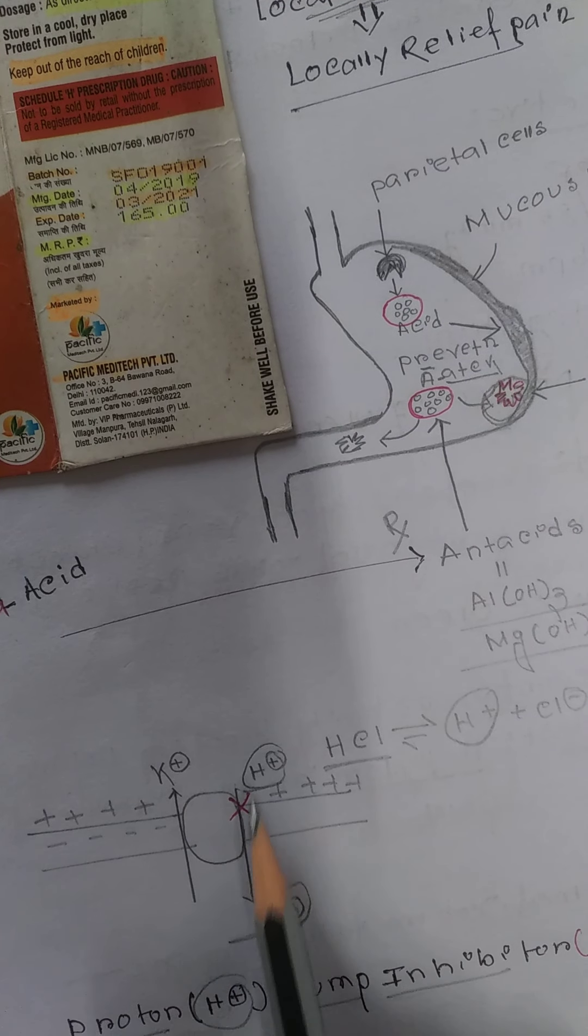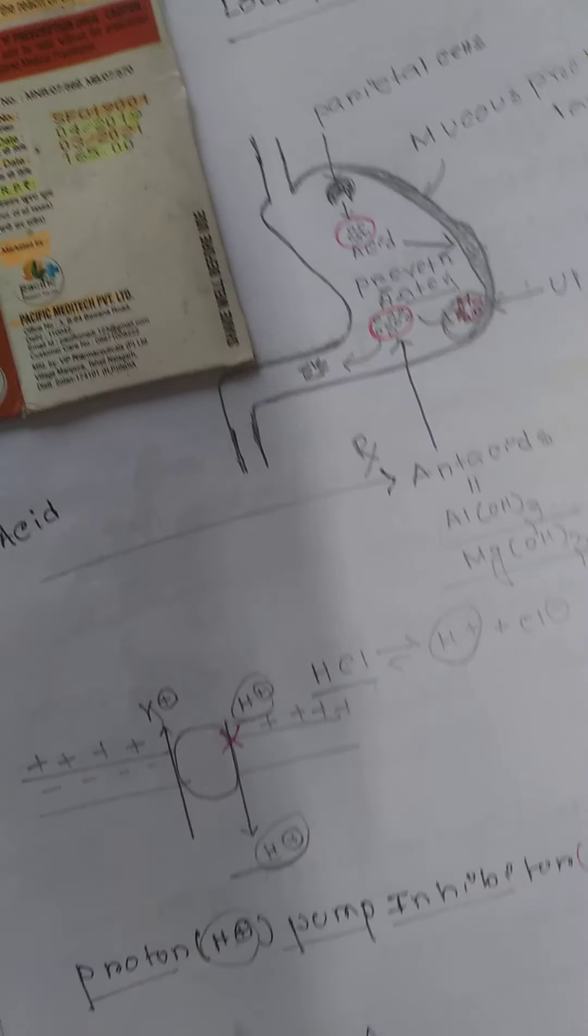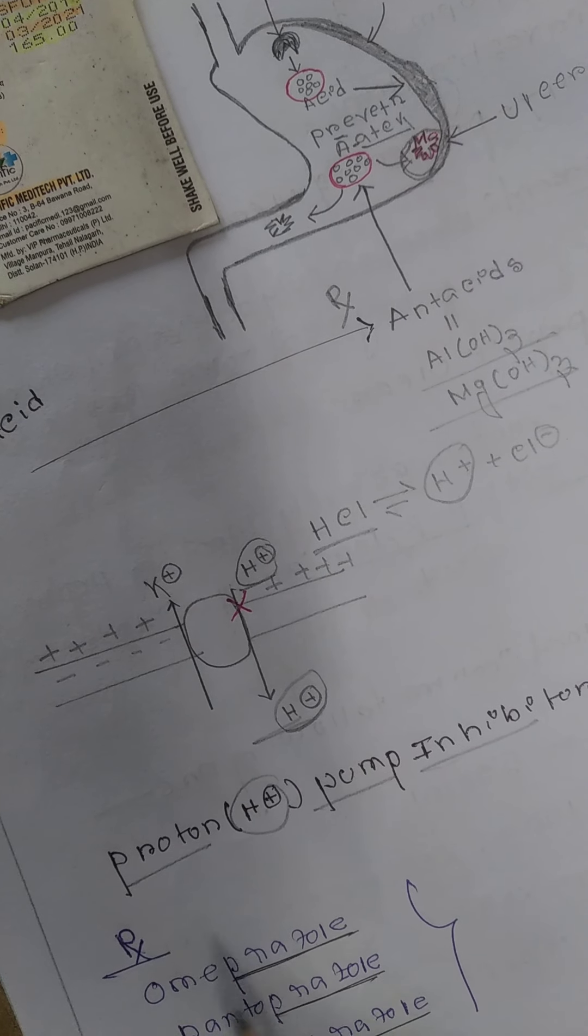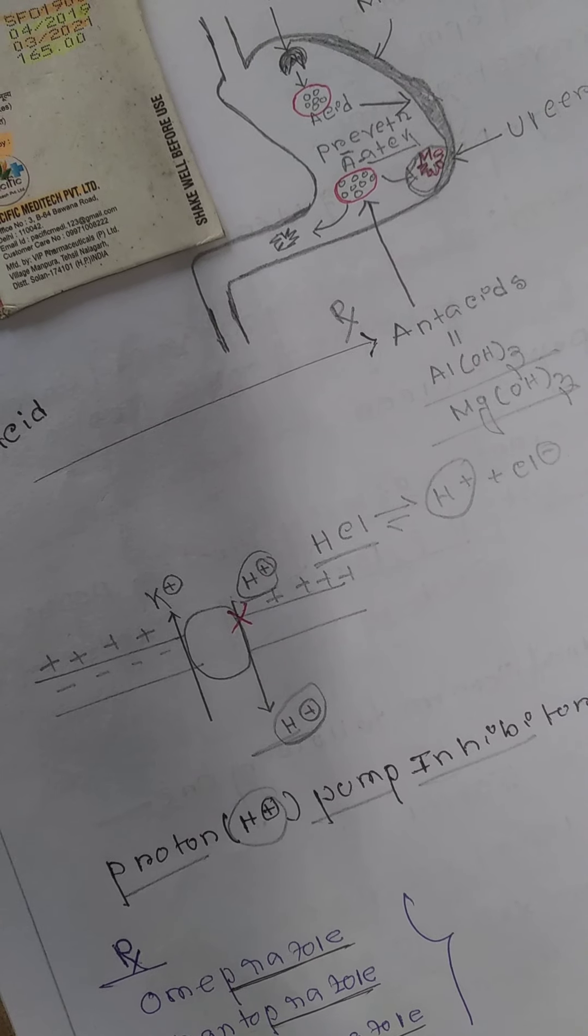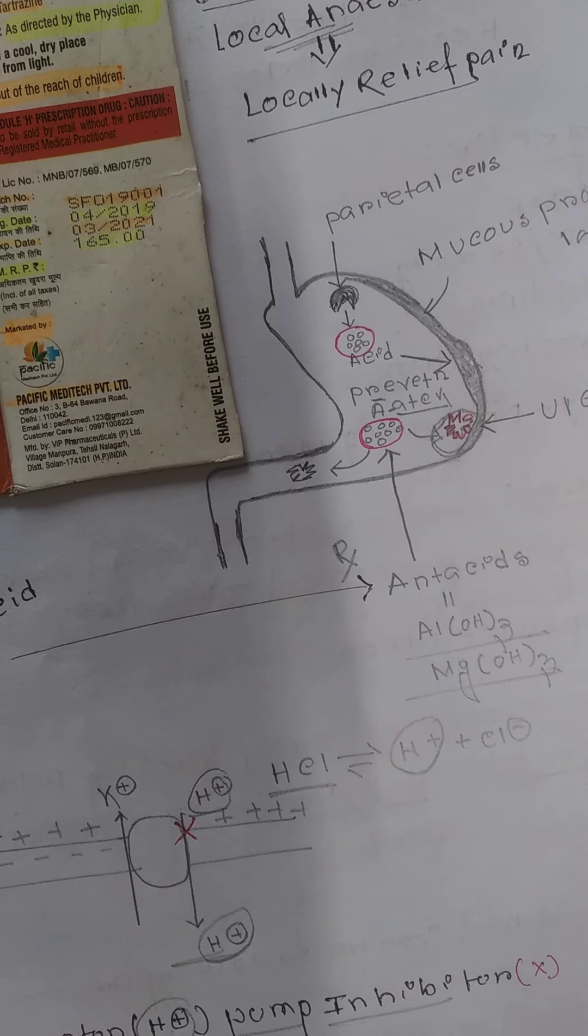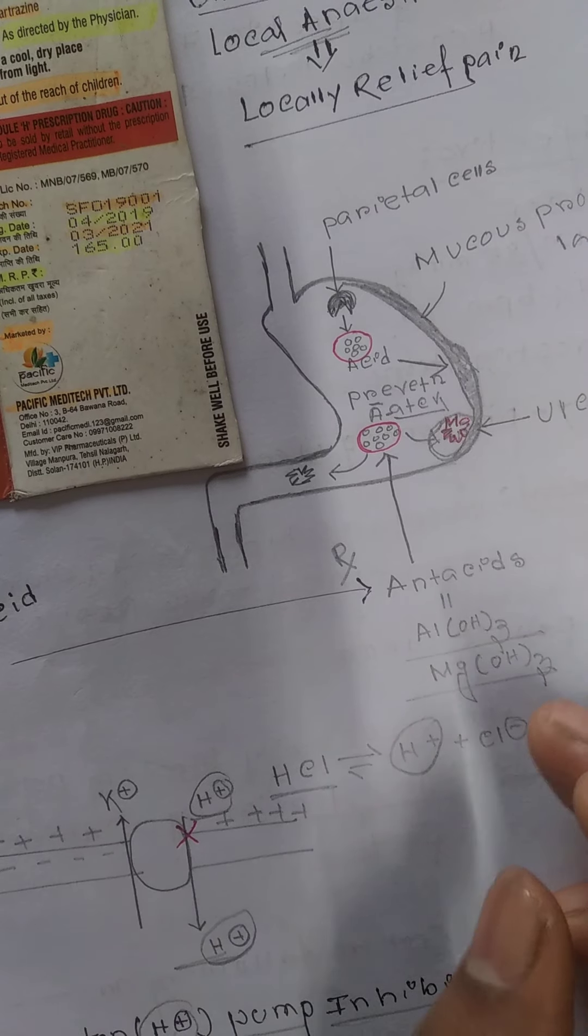This is why it's called proton pump inhibitor. Examples of proton pump inhibitors are omeprazole, pantoprazole, and esomeprazole. Thanks for watching.